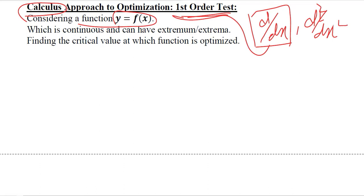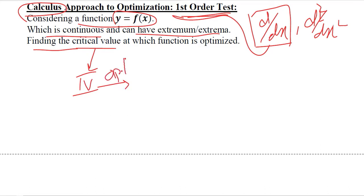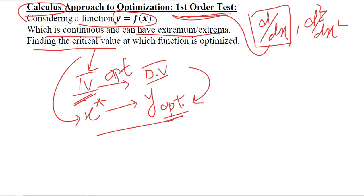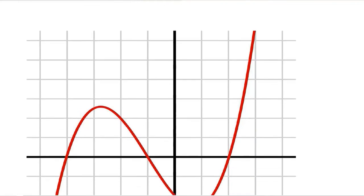We should assume that this is a continuous function, because differentiation is possible only if the function is continuous. Then we can find its extremum or extrema — that is, the maximum or minimum points. Now we are going to understand the critical value. A critical value is the value of the independent variable that will optimize the value of the dependent variable. So x at a certain value will lead to y being optimized, and that value of x is known as the critical value.